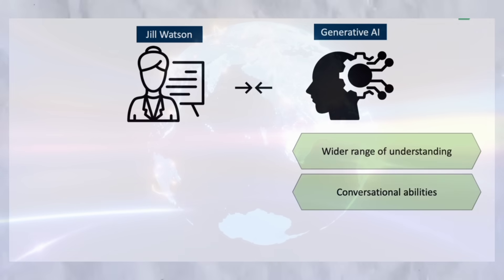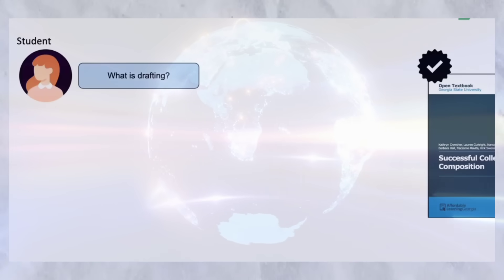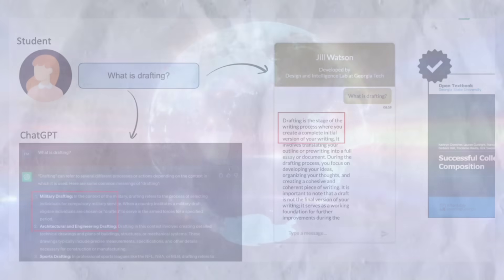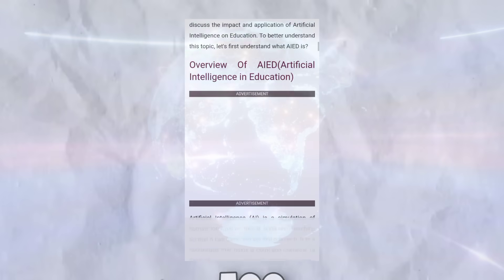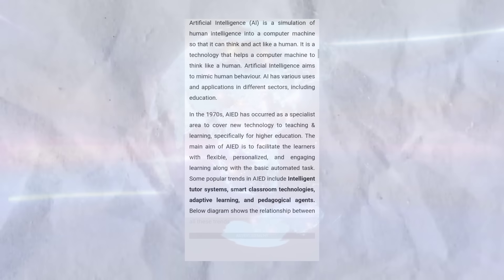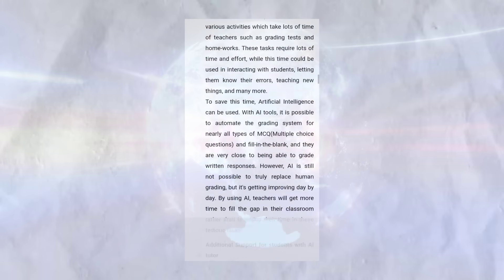Since Jill's launch, AI tutors have grown even more advanced using natural language processing to have back-and-forth dialogue tailored to each learner's pace and interests. Carnegie Mellon researchers found that their AI tutor helped 500 students grasp statistics concepts better because it adjusted the sequence and wording of explanations for each individual.